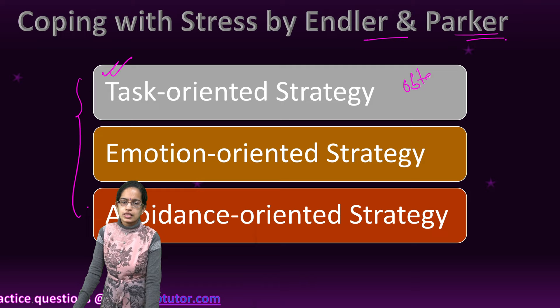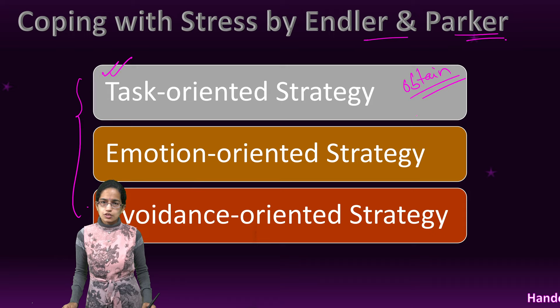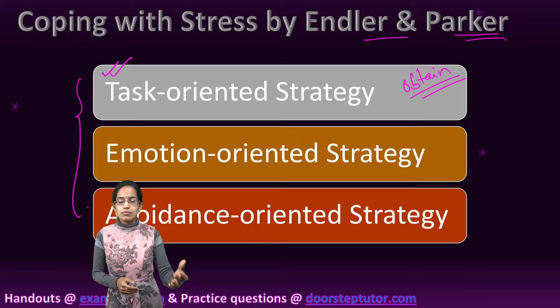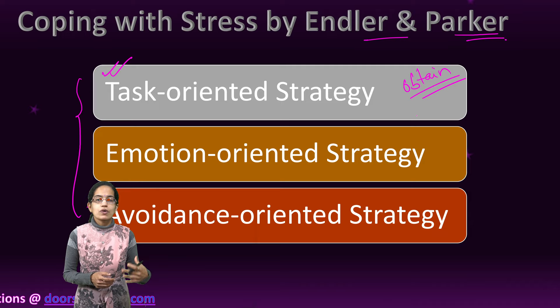A simple example: a person suffers from a disease. This is an immediate stress, but soon he tries to collect information — these are the five hospitals that provide good facility — meets a doctor and thinks his problem would be resolved. This stress level automatically declines. This is a task-oriented strategy.